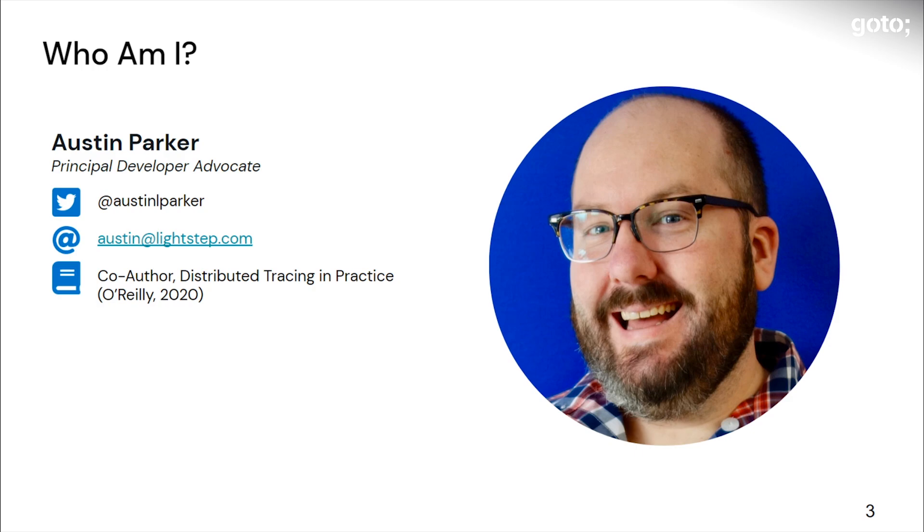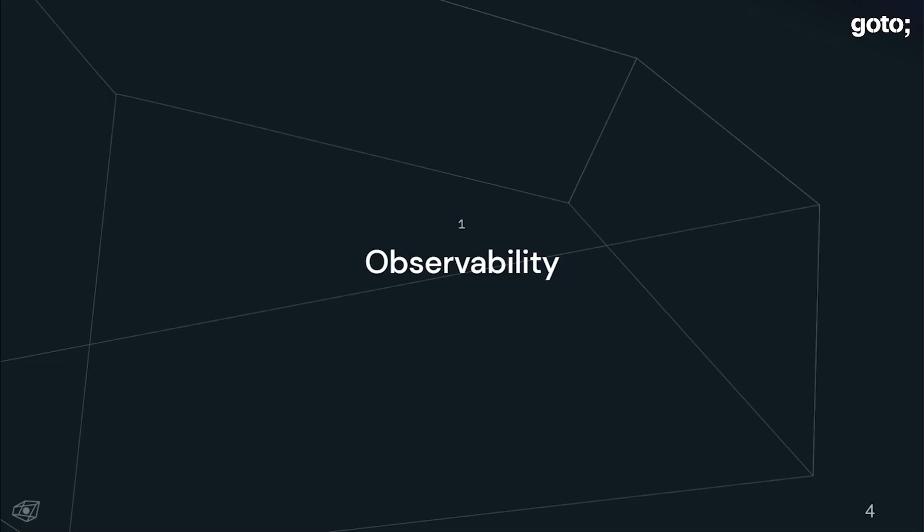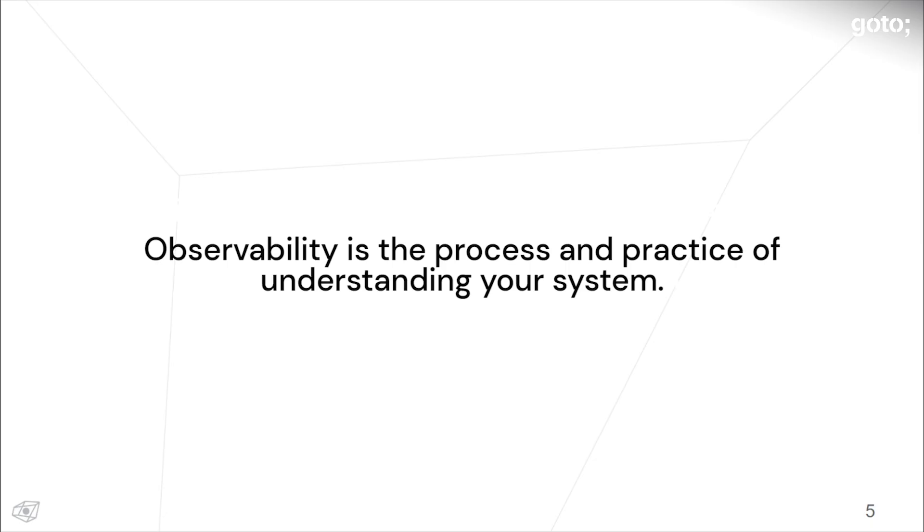To get started, let's talk about what observability is. I think there are several different definitions, but what I like to summarize it as is: observability is about a practice and a set of processes that help you understand your system. That can be your system in production, your very large system, your very small system—systems of all shapes and sizes. This is not just a thing that you need if you have some big world-spanning technology. This is very useful for everybody that's building software.